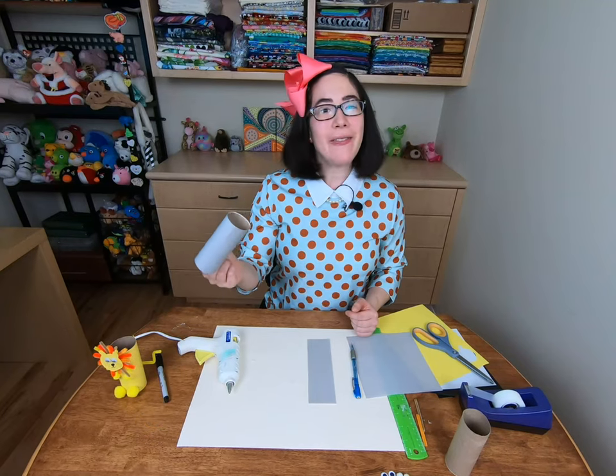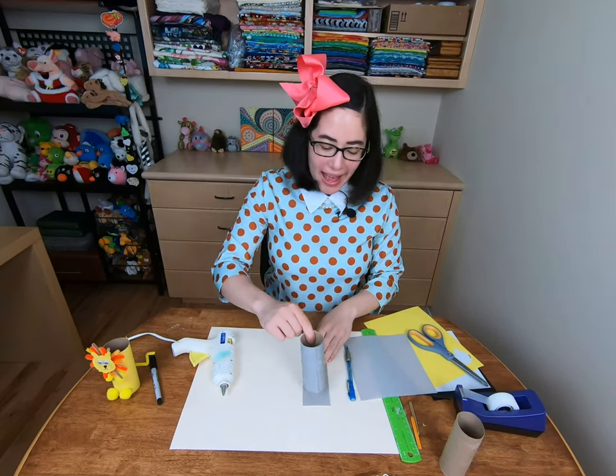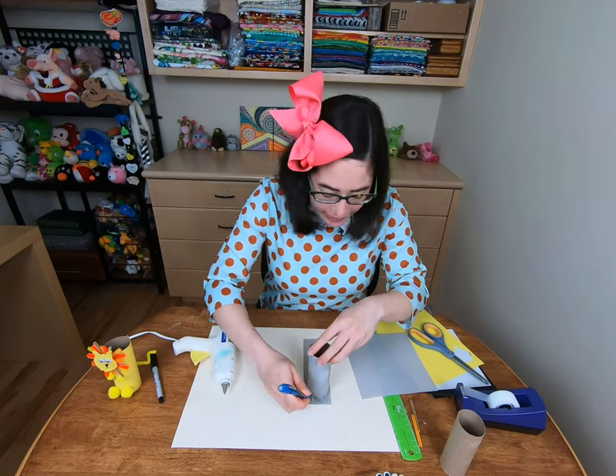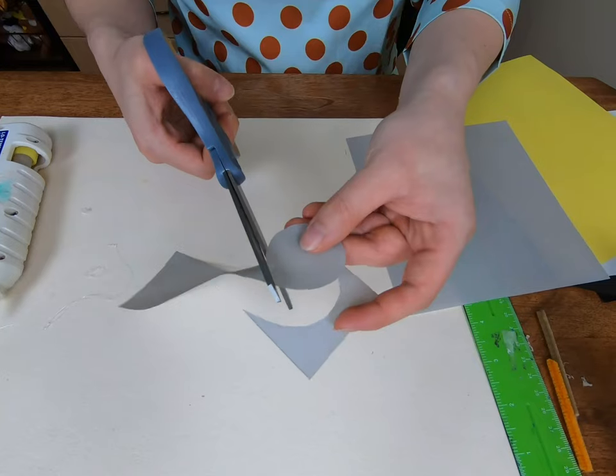Excellent. So let's make the face next. Using the end of the paper roll as a stencil for the face, trace a circle around the paper roll, and then cut it out.